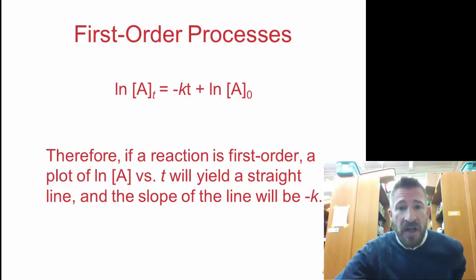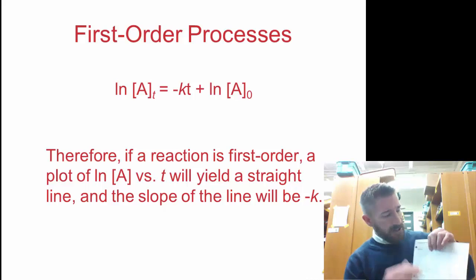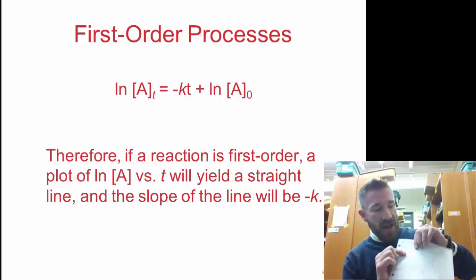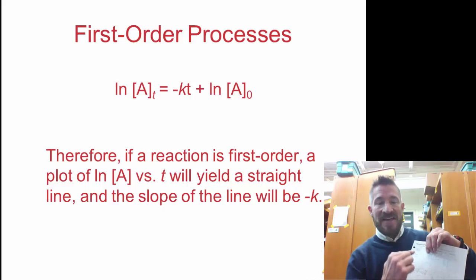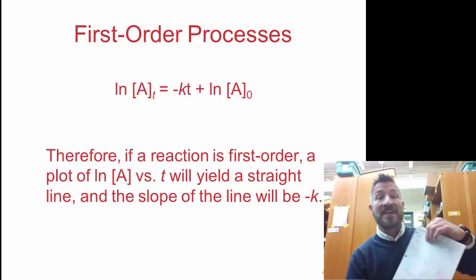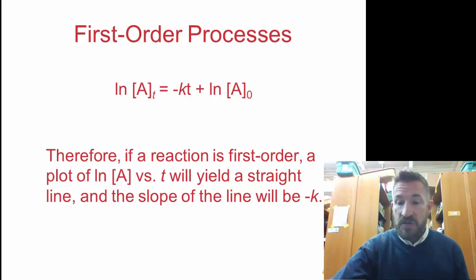A first order process, if a reaction is first order, it's going to give you a straight line. One thing I did here is I wrote a graph where I said concentration of A versus time. Then I did a straight line with a negative slope. That's what you'll see there.